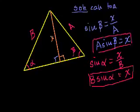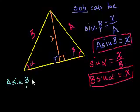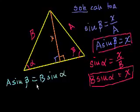So let me write that down in a soothing color. So we know that a sine of beta is equal to x, which is also equal to b sine of alpha. If we divide both sides of this equation by a, what do we get?